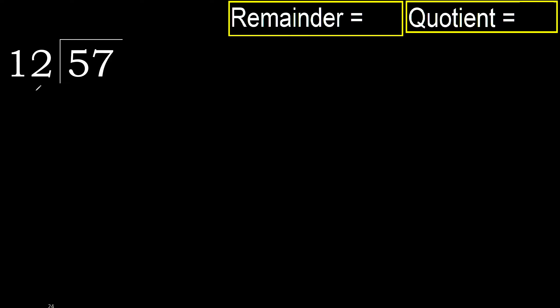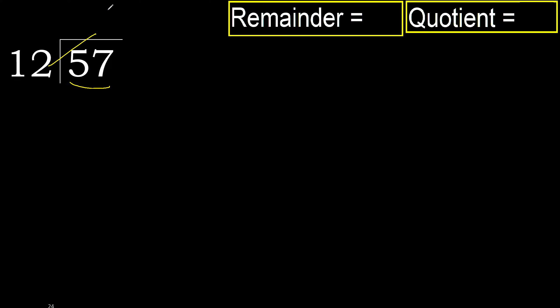57 divided by 12. 5 is less, therefore next. 57 is not less, therefore with 57, 12 multiplied by which number is nearest to 57.